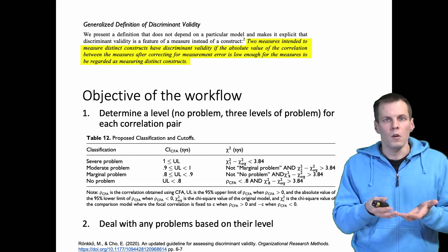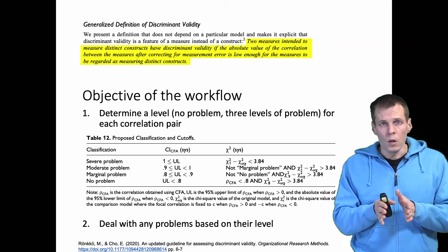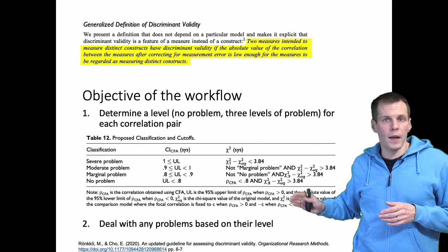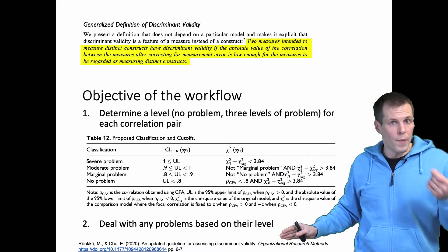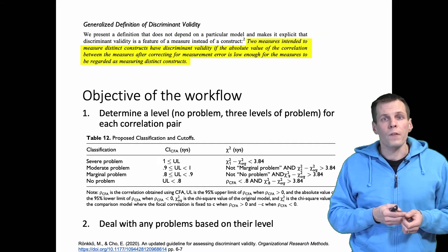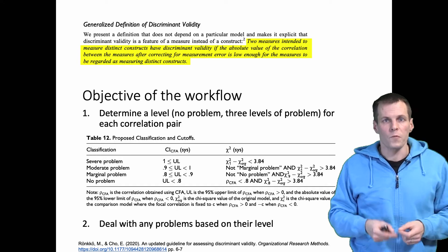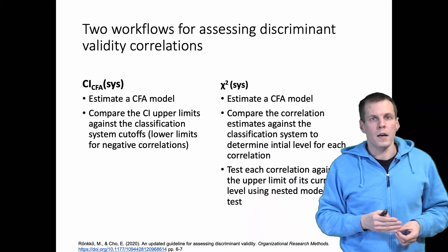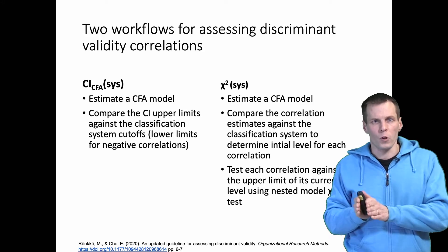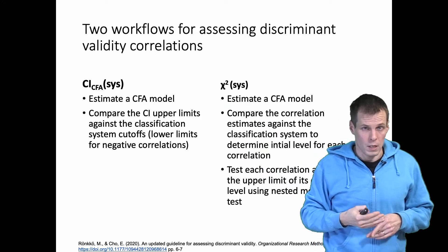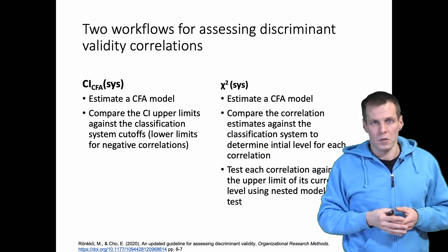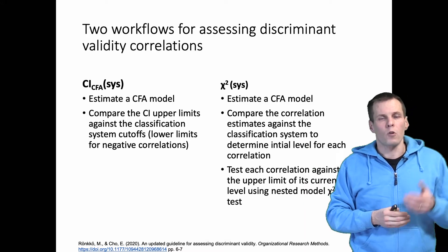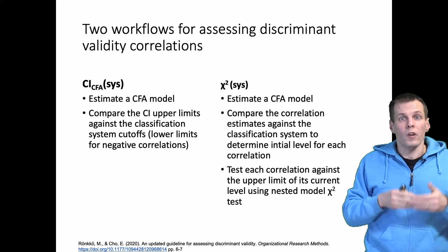We have two objectives. For each correlation pair in our study we need to determine the level of discriminant validity problem for that correlation pair — that's the first objective — and then we need to deal with the problem based on the level. We propose two different statistical approaches for implementing this workflow. These are CI-CFA-SYS, where CI stands for Confidence Interval, CFA stands for Confirmatory Factor Analysis, and SYS refers to system because this is a more systematic approach than simply running an analysis and reporting the results.